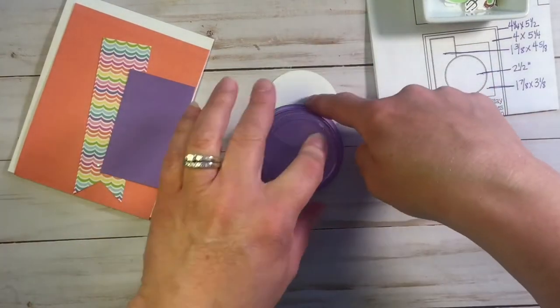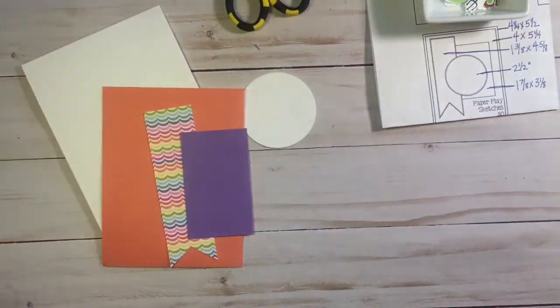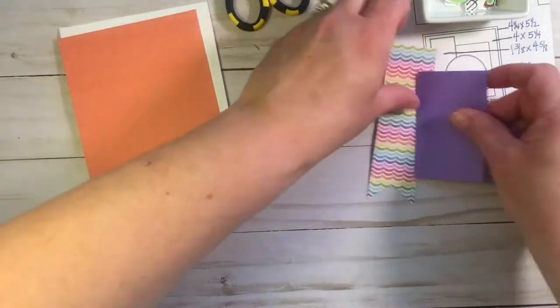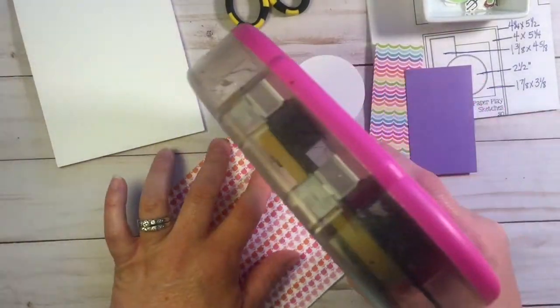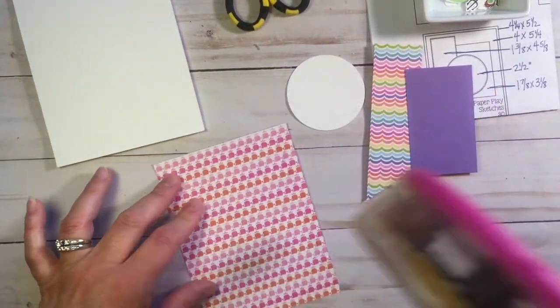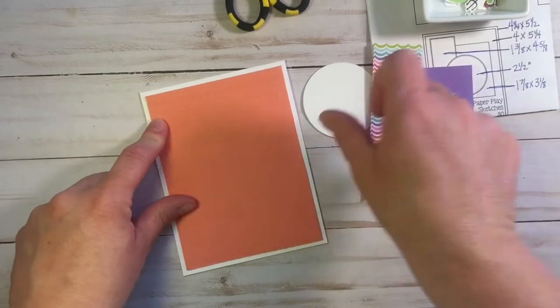And I'm showing you that you don't need to have a circle die. You can just take a glass, trim around it, draw a line around it with a pencil, and trim it around with your scissors. So you don't need fancy dies and die cutters and machines, you can simply just use a pencil, a glass, and scissors.